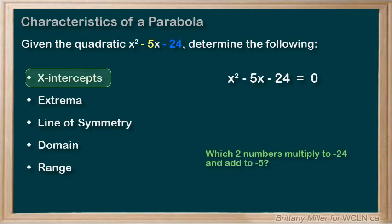What are two numbers that multiply to negative 24 and add to negative 5? Well, it's negative 8 and 3, so our x-intercepts will be x equals 8 and x equals negative 3.